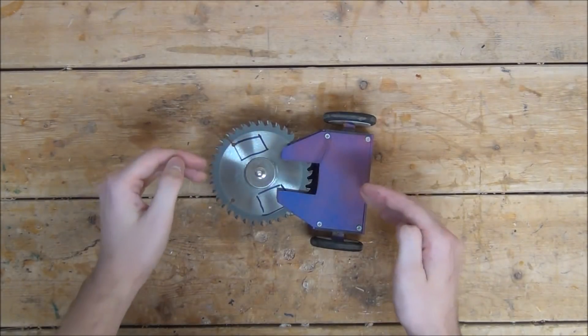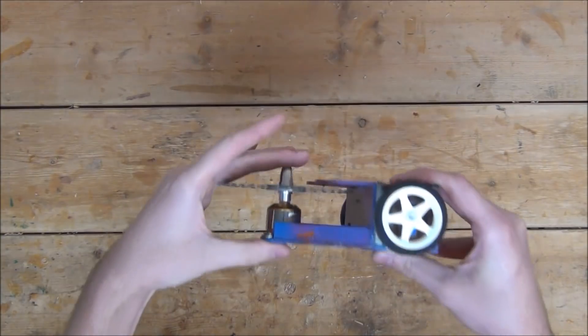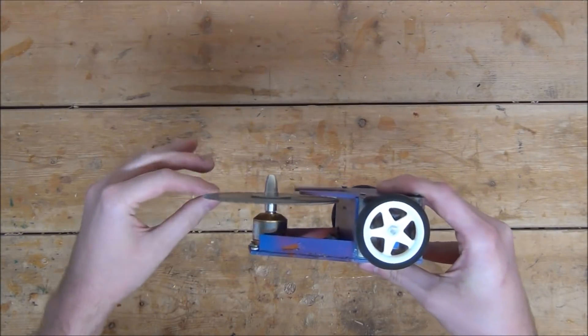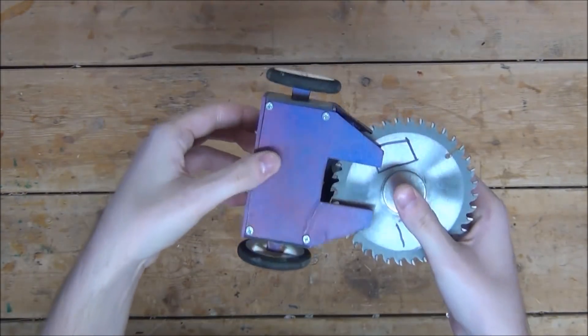And secondly, as I'm sure you can see, the cone piece that I'm using right now to bolt down the blade sticks well above the top of the robot, preventing it from being truly invertible. Because the wheels are perfectly centered so it can drive on both sides.